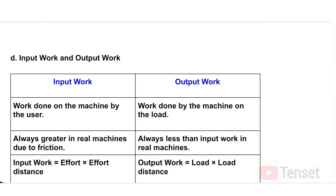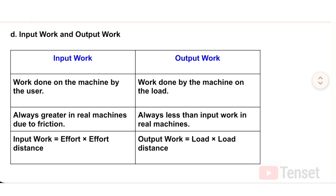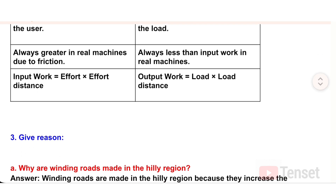D) Input Work vs. Output Work: Input work is the work done on the machine by the user; output work is the work done by the machine on the load. Input work is always greater in real machines due to friction; output work is always less than input work. Input work equals effort times effort distance; output work equals load times load distance.